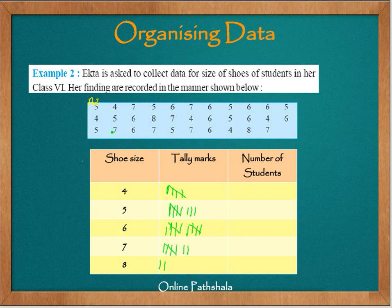Let's check the tally counts once again. For size 5, counting through the tally marks gives 8 students. For size 4, the count comes to 5 students. For size 6, the total is 10 students.